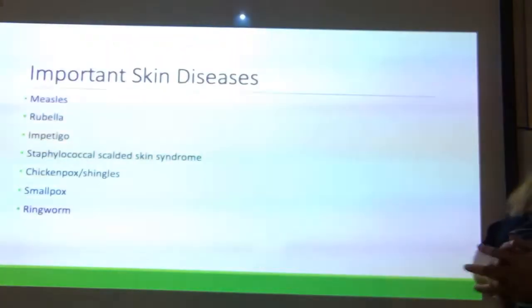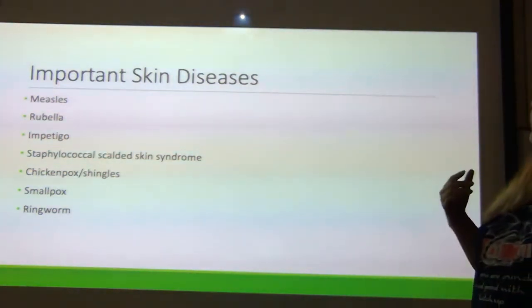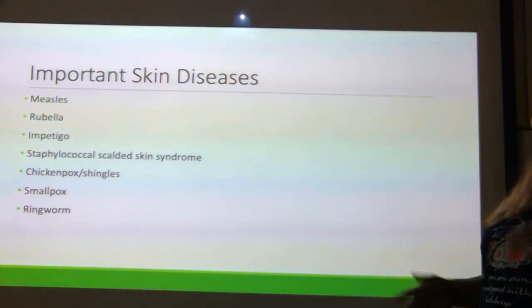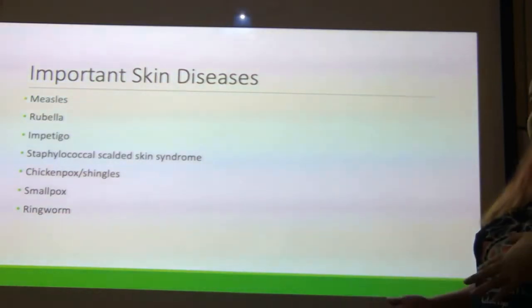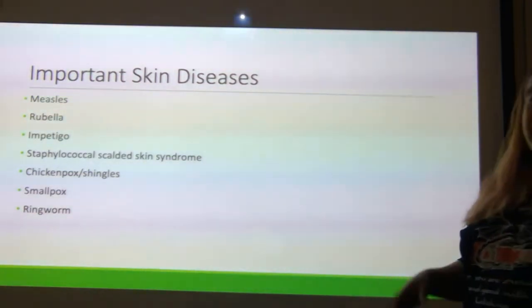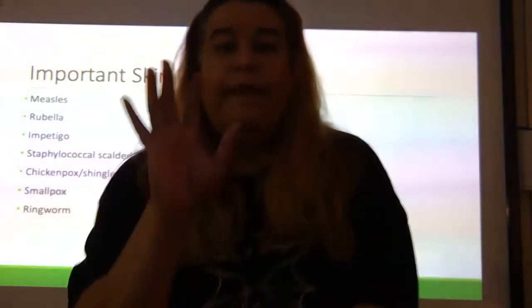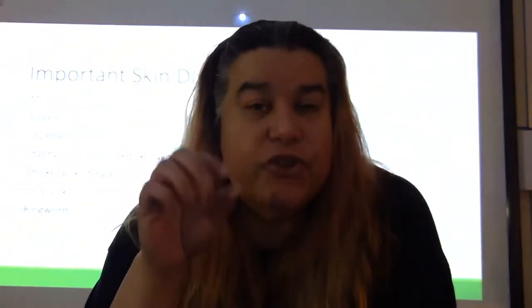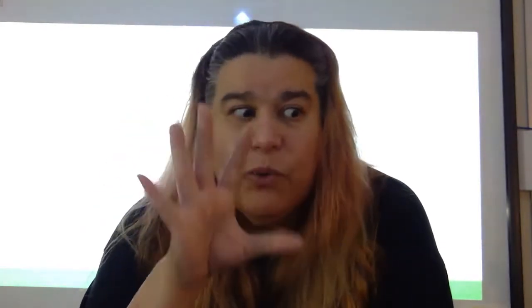Important skin diseases include measles, rubella, impetigo, staphylococcal scalded skin syndrome, chicken pox that can turn into shingles, smallpox, and ringworm. I want to warn you there are some pictures that are pretty bad as far as showing what these diseases look like on an actual person. If you're in microbiology, I'm hoping you're of a strong constitution, but in order for you to see what these things look like, I have pictures.